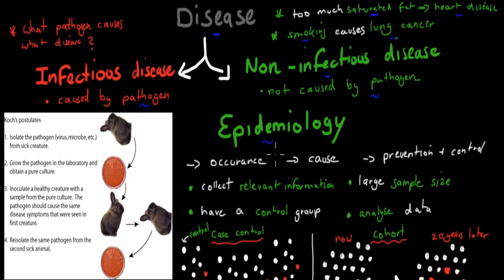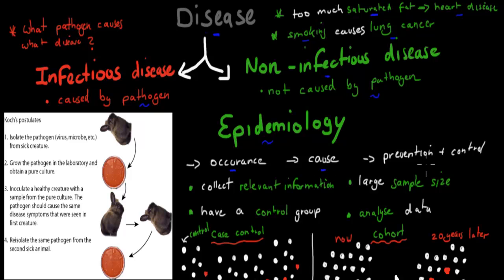In epidemiology, we try to find out the occurrence of a disease — so where it happens and how many people are affected — as well as the cause of a disease, whether non-infectious or infectious, and also what we can do to prevent or control that disease.